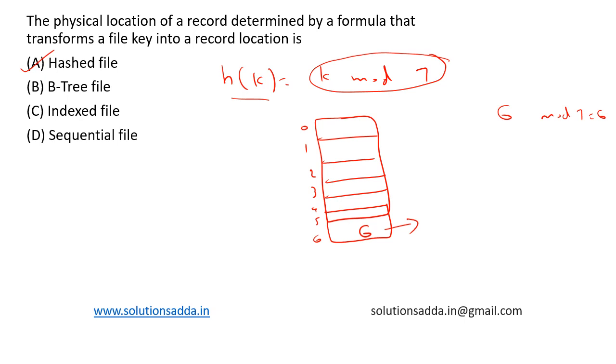All the other options such as B-tree file, indexed file, and sequential file do not use a formula to obtain the location of the record. So hashed file is the correct answer here.